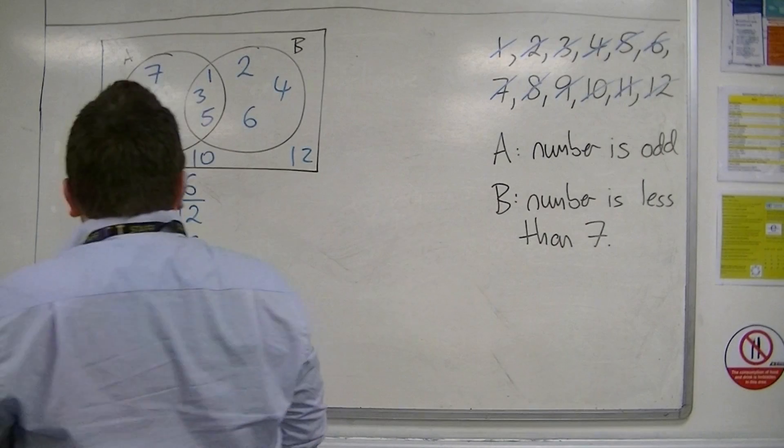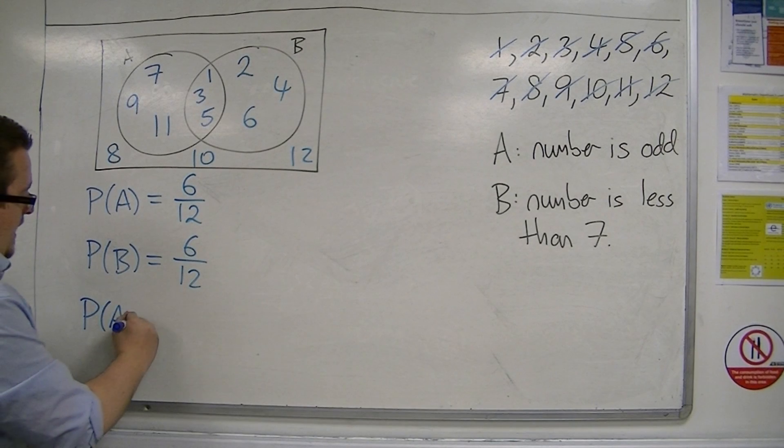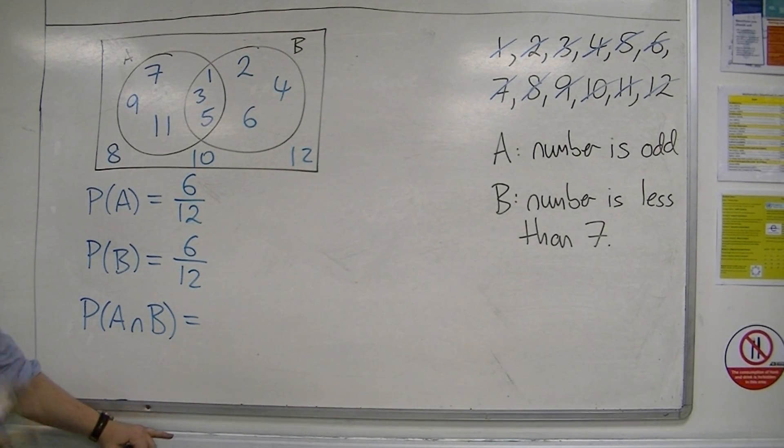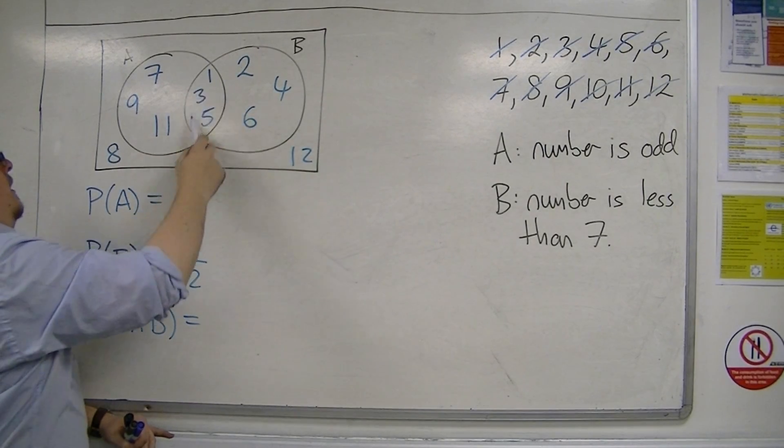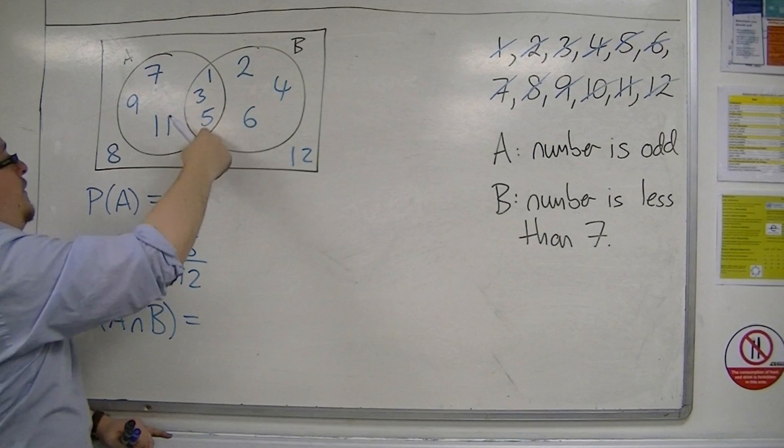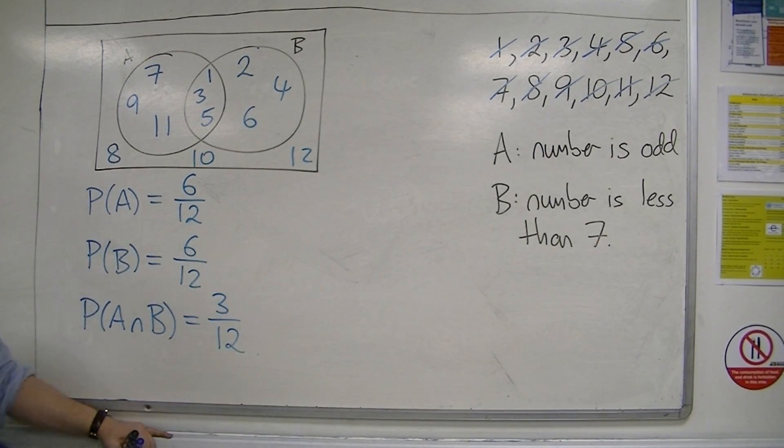Now, let's say we were looking at the probability of A intersection B. Okay, so the intersection is this middle part. So the probability of them both being odd and less than 7 is 3 out of 12. Okay, so 1 quarter.